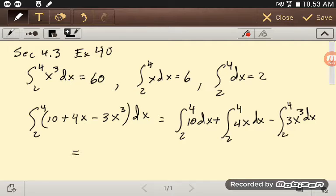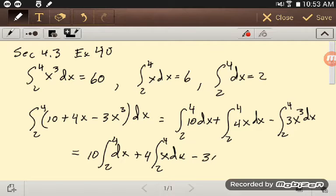Well, that then, using our properties of integrals, is 10 times the integral from 2 to 4 dx. And then plus, we can take a 4 out here, and we've got 4 times the integral from 2 to 4 of x dx. And then we can take our minus 3 out, and we've got minus 3 integral from 2 to 4 of x cubed dx.